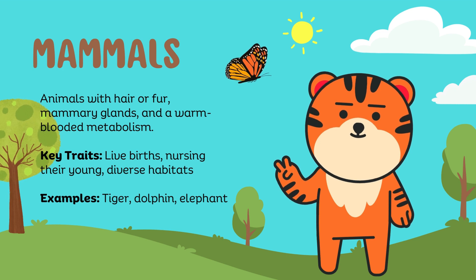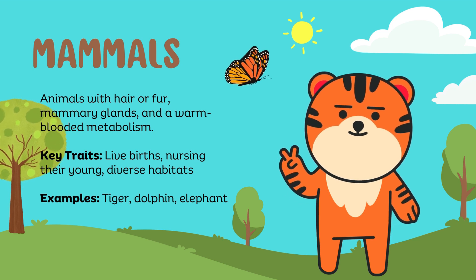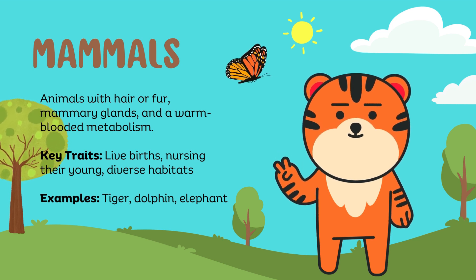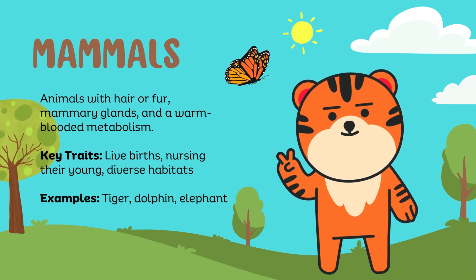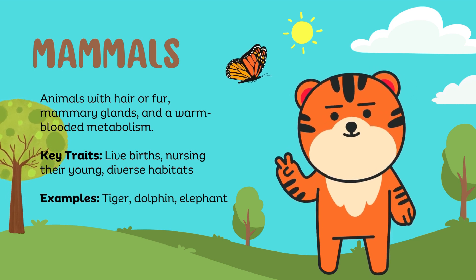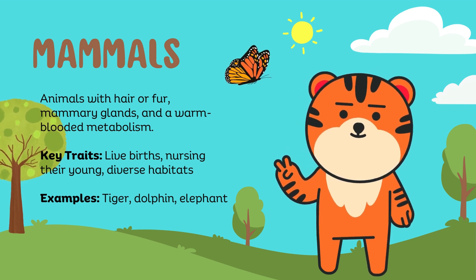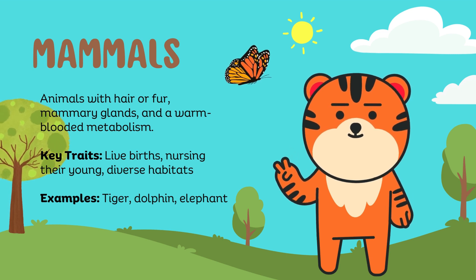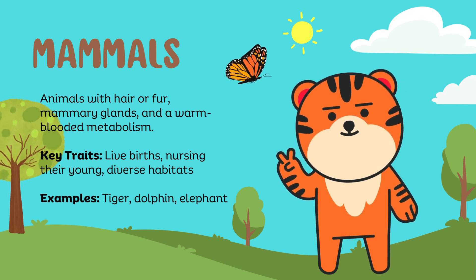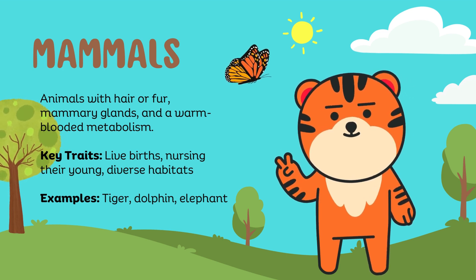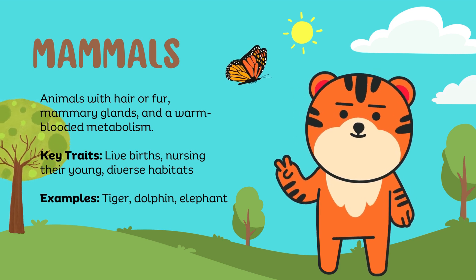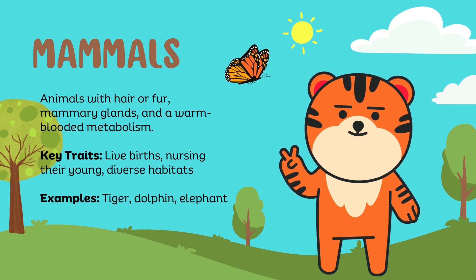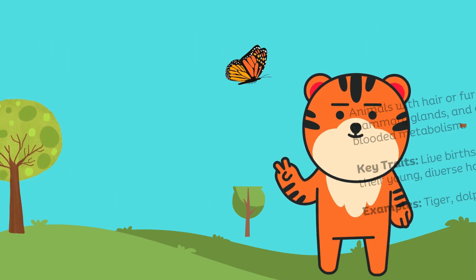Animals with hair or fur, mammary glands, and a warm-blooded metabolism. Key traits: live births, nursing their young, diverse habitats. Examples: tiger, dolphin, elephant.